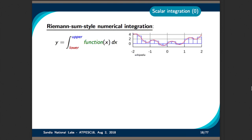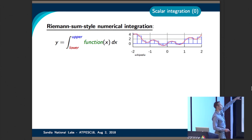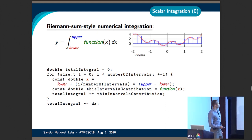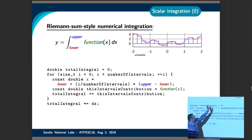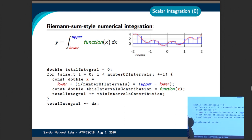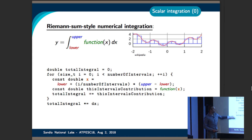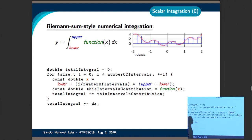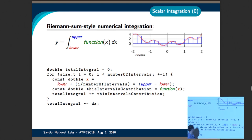For another example of the Kokkos parallel pattern API, we'll go through a Riemann sum-style numerical integration. With this code, we loop over some number of equal-width rectangles, get the left endpoint, compute the function's value at that endpoint, and sum up the areas of each of those rectangles.